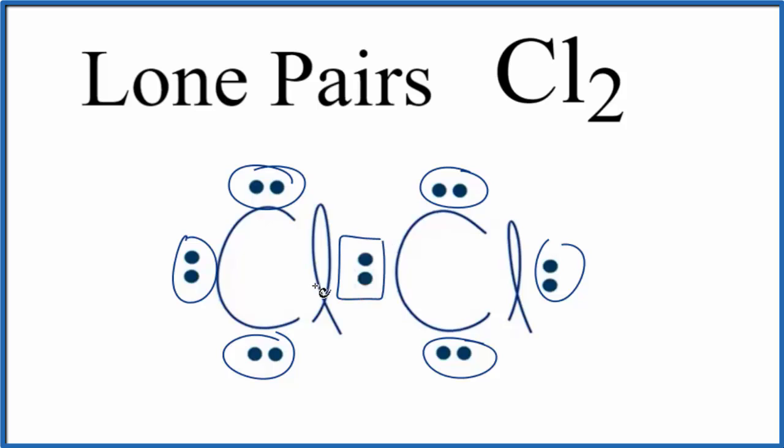This pair right here, it's between atoms. We call this a bonded pair of electrons. It's a covalent bond between the two chlorine atoms. Sometimes you'll see this replaced with a line to show that we're sharing a pair of electrons here and it's a chemical bond.